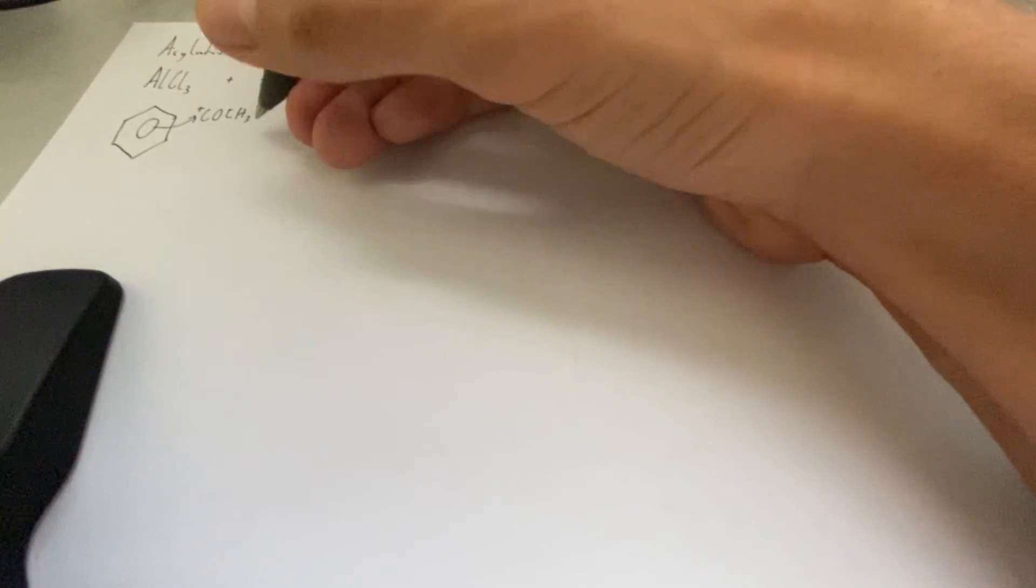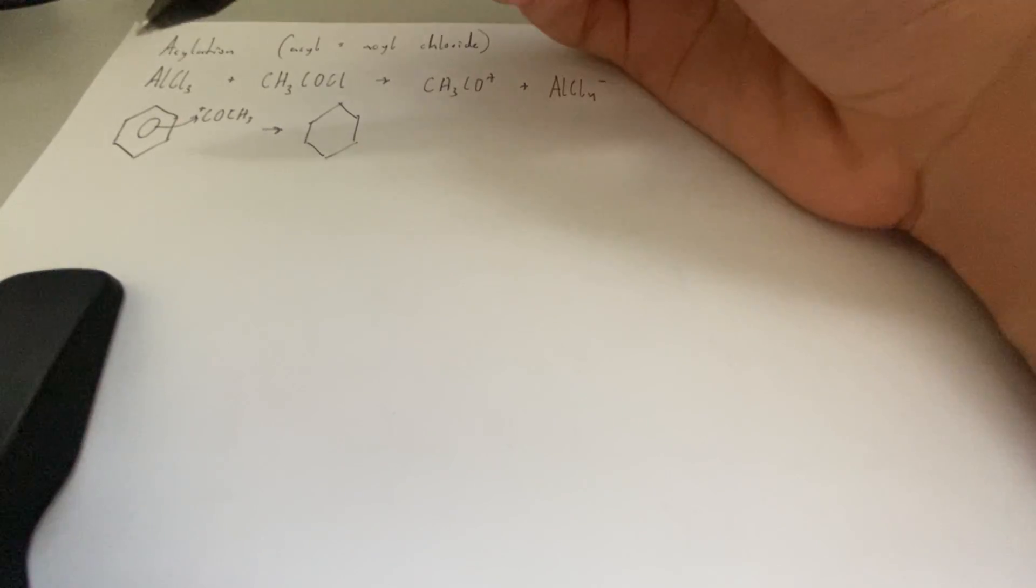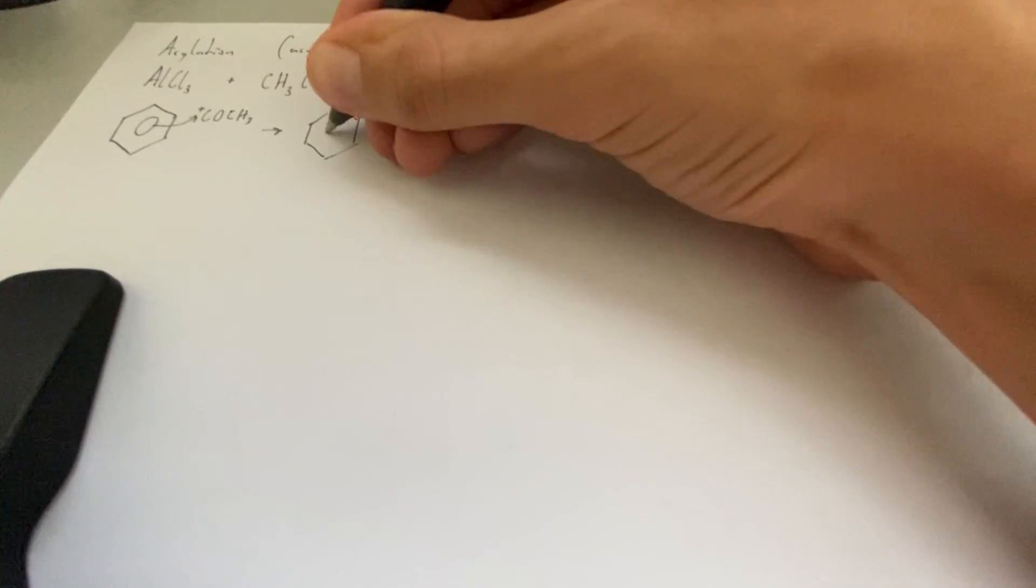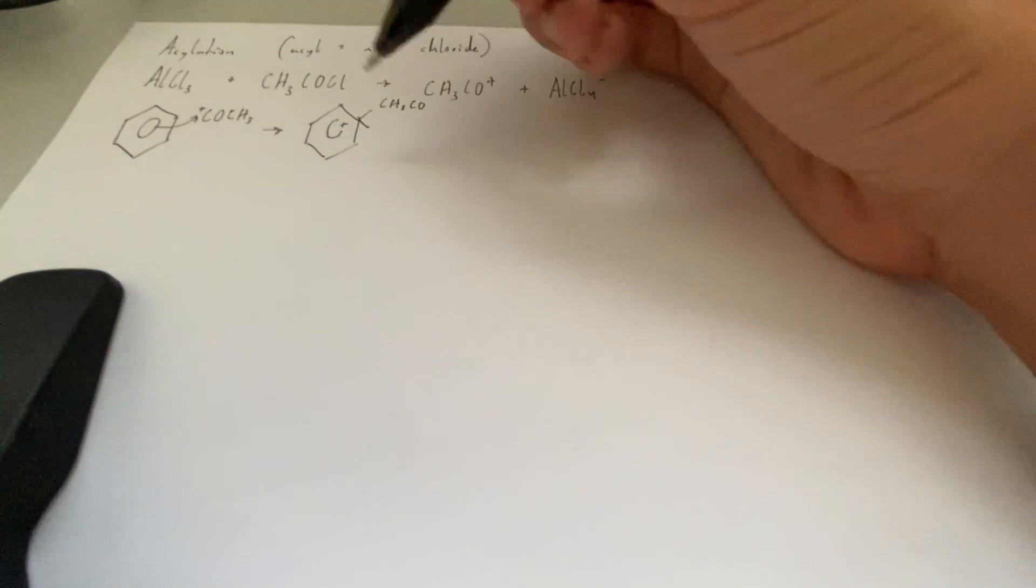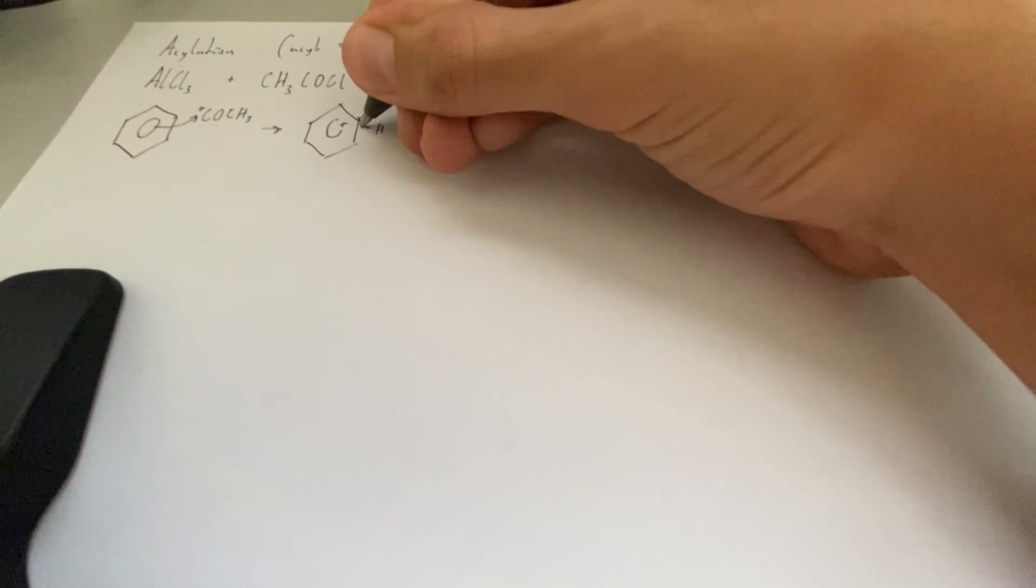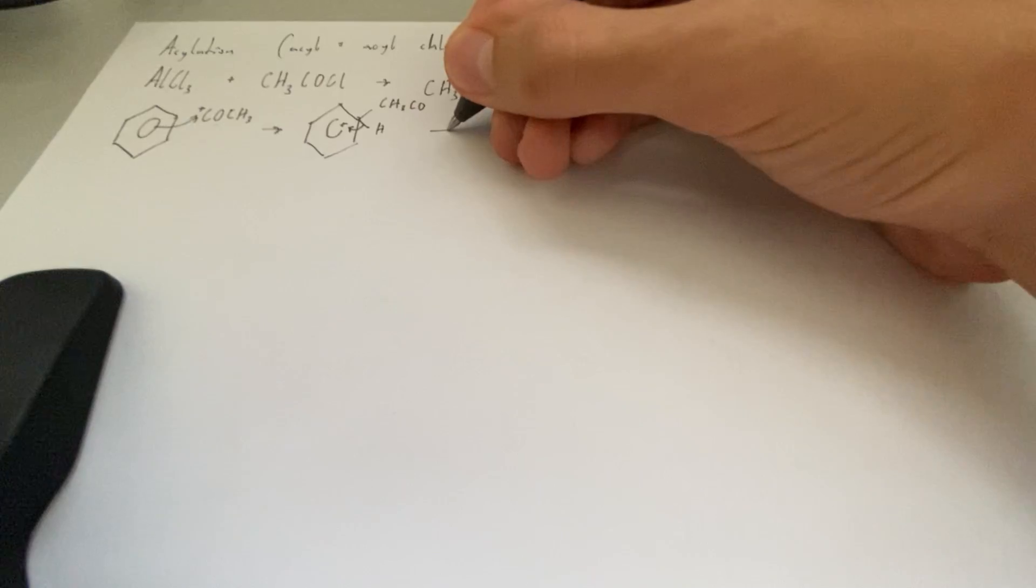We have COCH3. This gets attacked. And remember, since we have this delocalized ring of electrons that's vulnerable to electrophilic attack, these reactions are pretty easy to do. They're pretty common. Now, we have our distorted ring. We have the CH3CO. We're going to have these electrons in the bond drawn over to the ring, releasing the hydrogen.